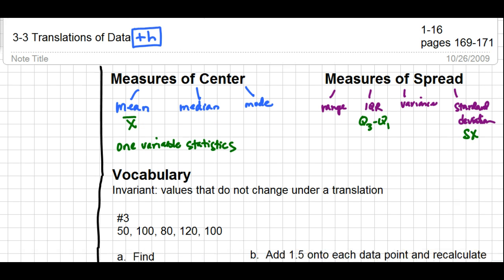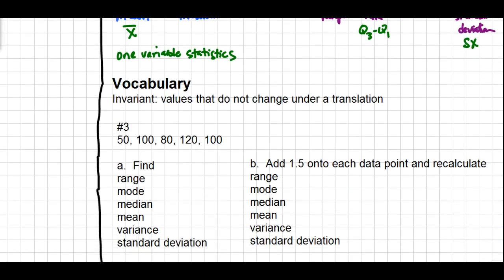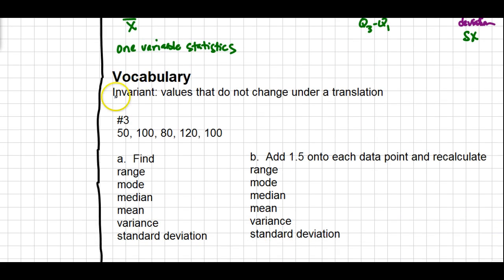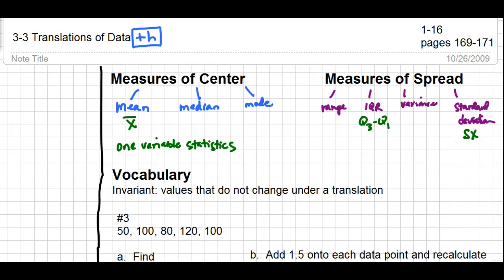Today we're going to be looking at how the measures of center and the measures of spread are affected when we translate data and add a number on to the data. One piece of information that's new today is the word invariant. When things vary, they change. If things are invariant, they don't change. We're going to try to figure out which of the measures of center and the measures of spread are invariant.